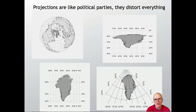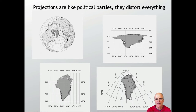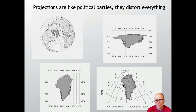Like political parties, projections distort everything in a different way. Here is Greenland as seen from space — approximately what it would look like from a spacecraft above it. One common map projection, the Mercator projection, really flattens and expands Greenland, making it look nothing like what it actually is on the surface of the Earth. Another common projection fixes that somewhat, and an optimized projection is pretty close to what Greenland actually looks like.